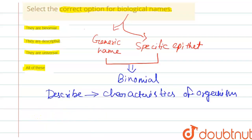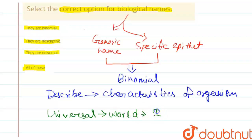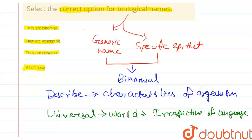Biological names are also universal because they are valid all over the world, irrespective of language. So the characteristics of biological names are: they are binomial, they are descriptive, and they are universal.